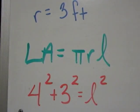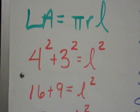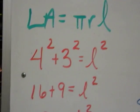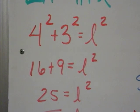4 squared plus 3 squared is L squared. So 16 plus 9 is L squared. 16 and 9 make 25, so 25 is equal to L squared.